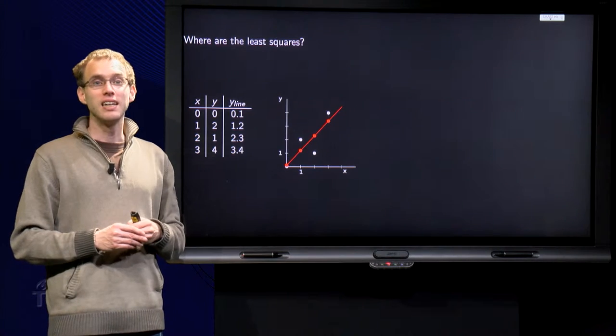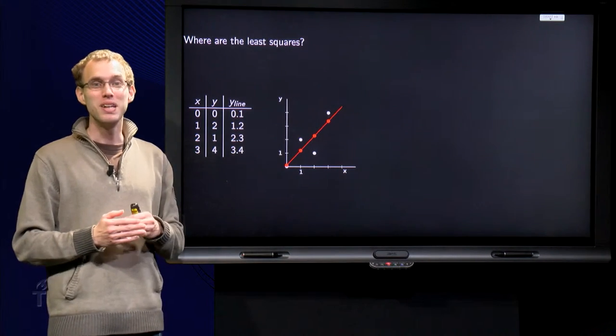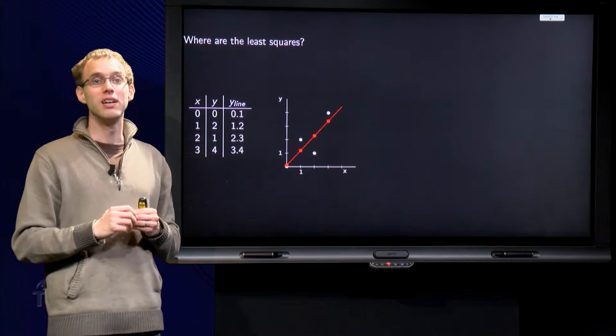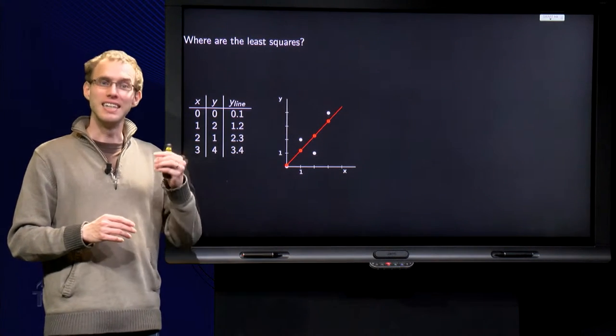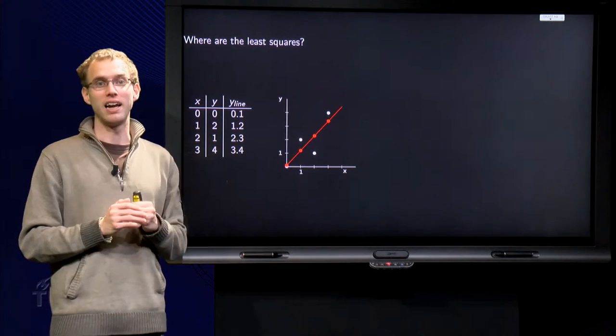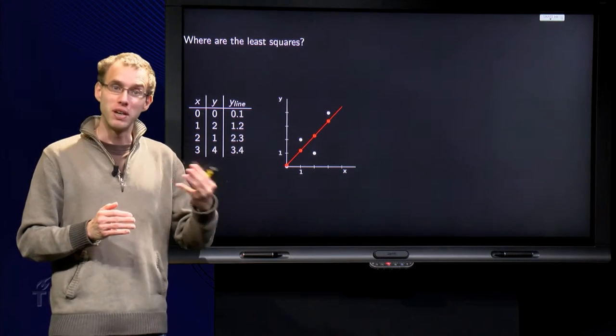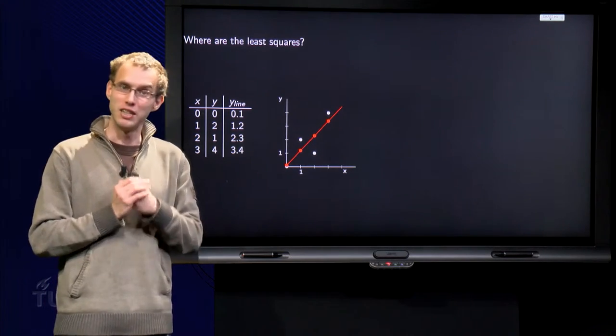You will see that the least squares method is actually exactly minimizing what you intuitively want to be minimized, the distances from your data points to the optimal line. So let us take a look at why the least squares method works like that in this video.